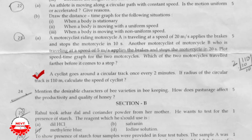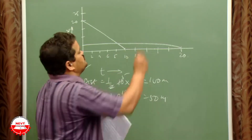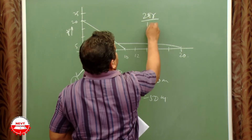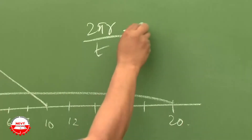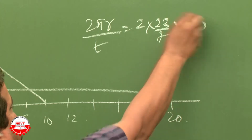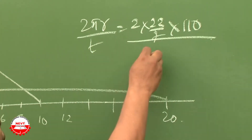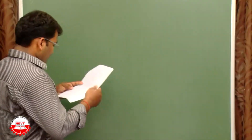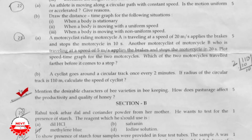Second part: a cyclist goes around a circular track once every 2 minutes. If the radius is 110 m, calculate the speed. Speed = 2πr/T = 2 × (22/7) × 110 / 120 seconds.